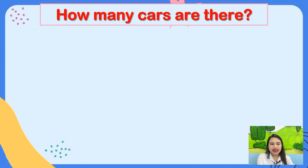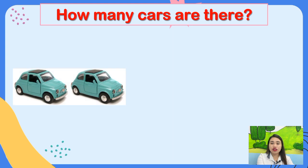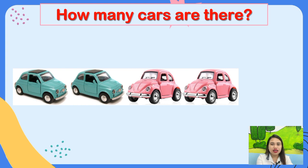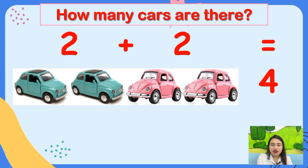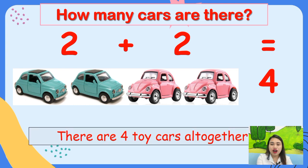Very good. Next, how many cars are there? How many green cars? There are two green cars. How about the pink cars? There are two pink cars. So how many cars are there altogether? Two green cars plus two pink cars equals four cars. Therefore, there are four toy cars altogether.